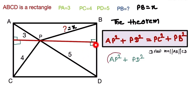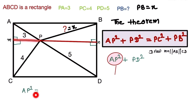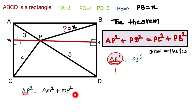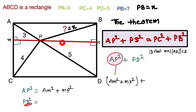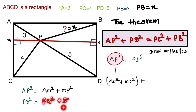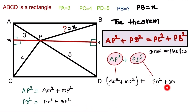AP² can be written as AM² plus MP² by the Pythagorean theorem. So AP² = AM² + MP². For PD², it is the hypotenuse, so PD² = PN² + DN² by the Pythagorean theorem.